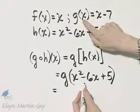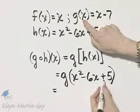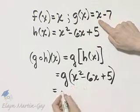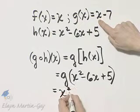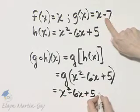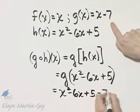Here's my g function. Instead of x, I have this trinomial, so it equals, instead of x, I write this trinomial, x squared minus 6x plus 5, and then continue on and write minus 7.